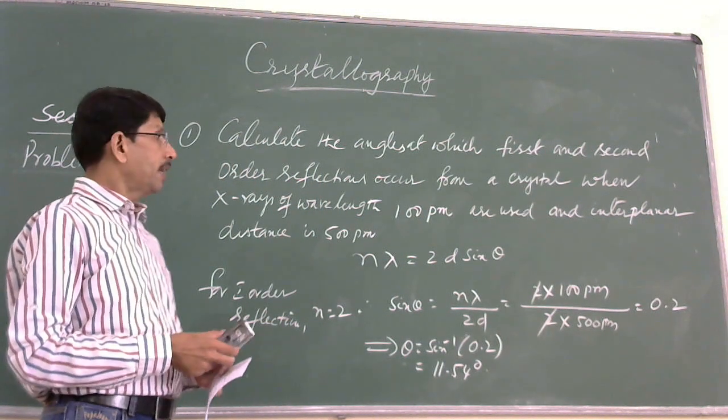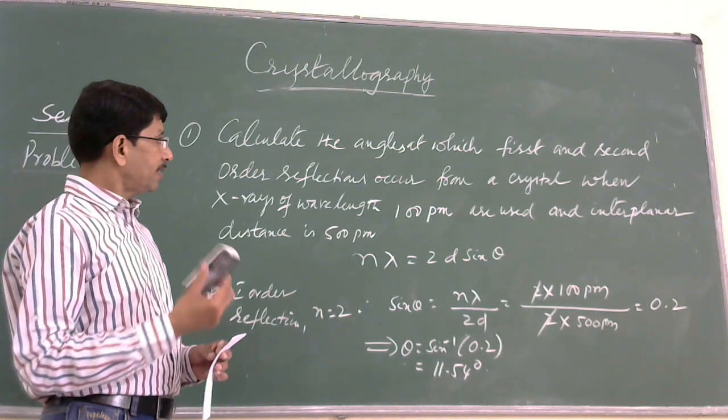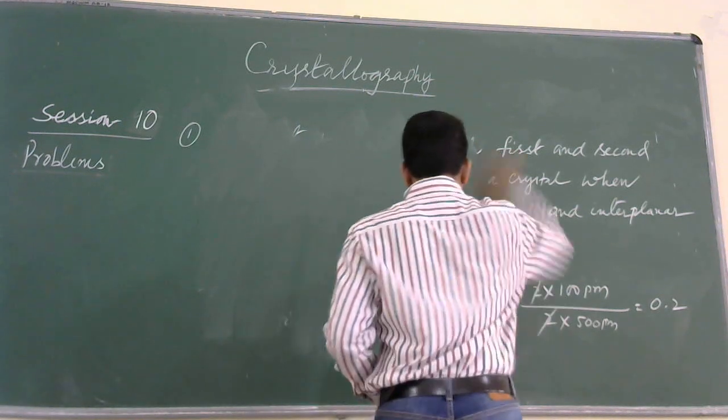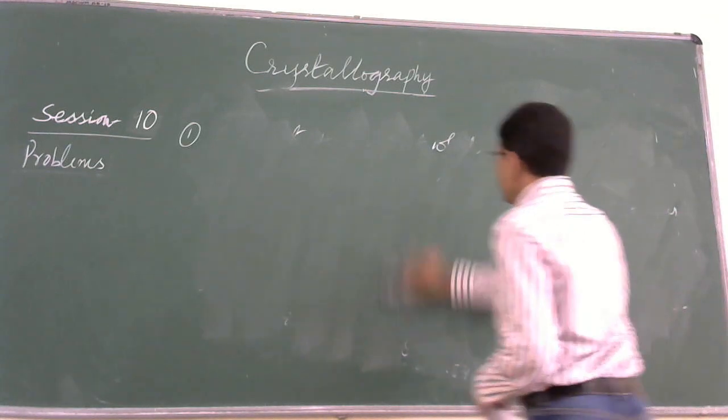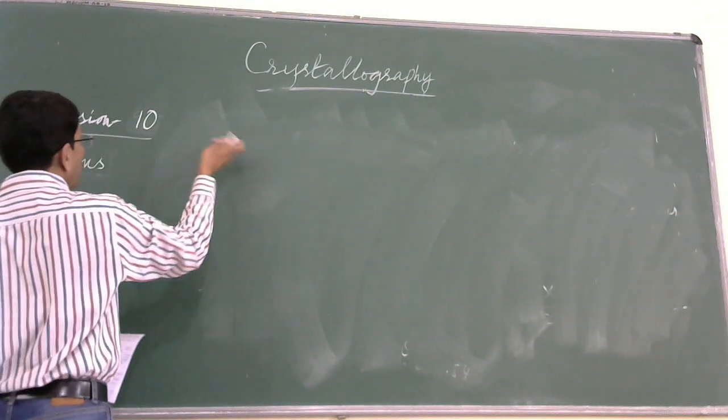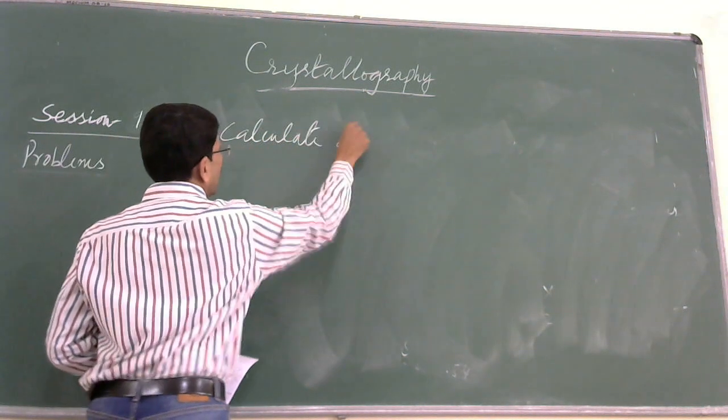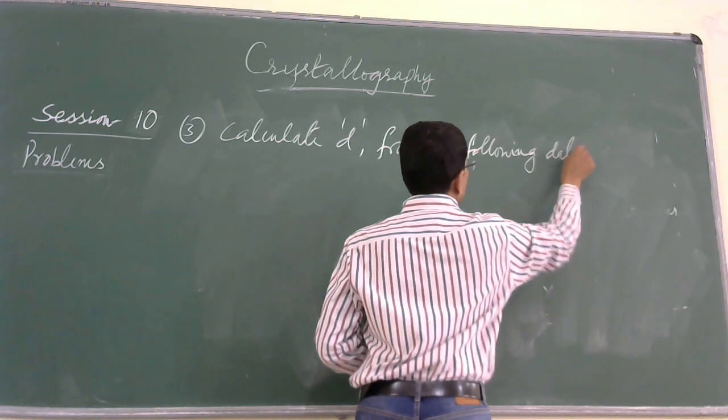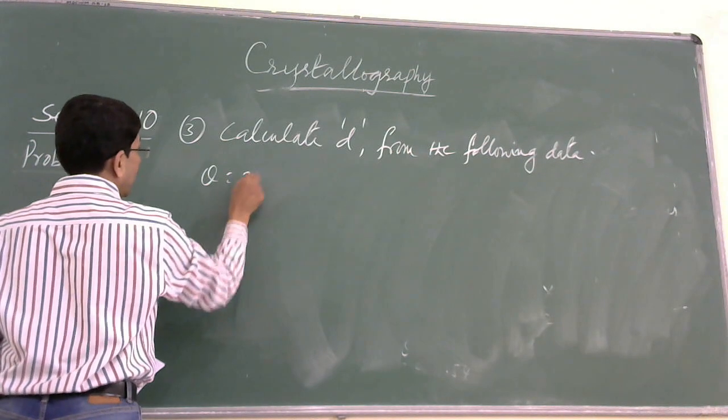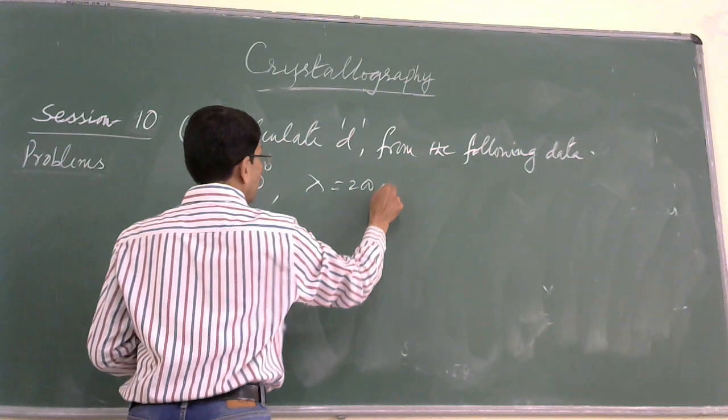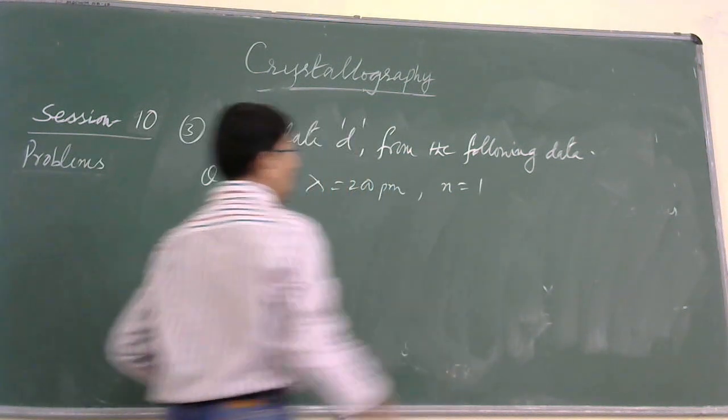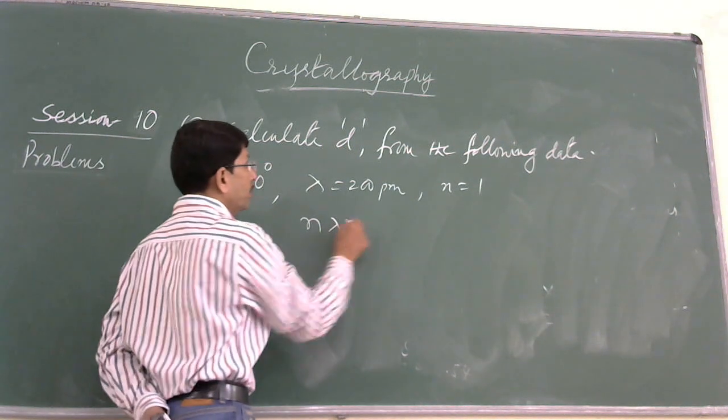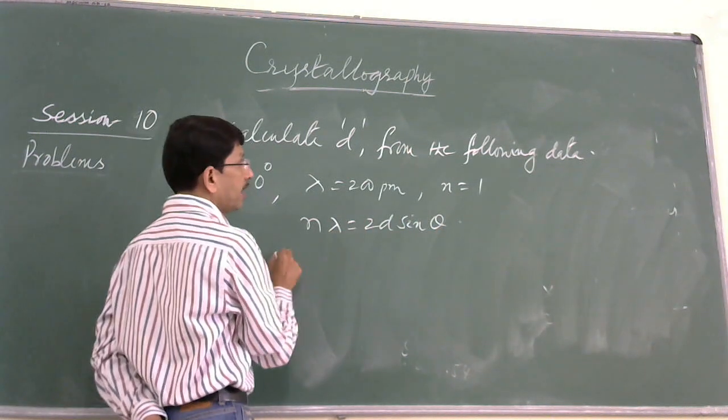This is how we can calculate theta. Now, using the same equation, we'll calculate the interplanar distance. Problem 3: Calculate D from the following data. Theta is 30 degrees, lambda wavelength of X-rays is 200 angstroms, order of reflection N is 1. So in order to calculate the interplanar distance D, we will consider Bragg's equation.